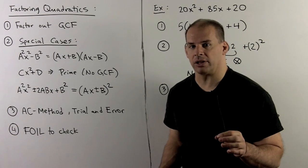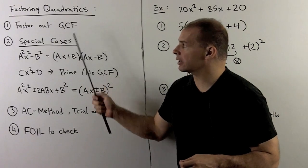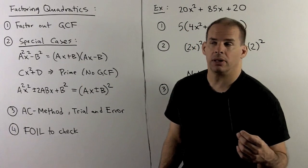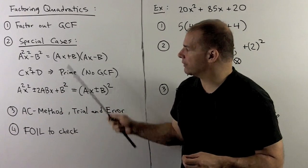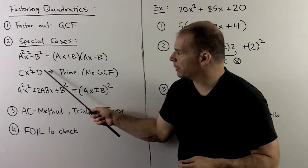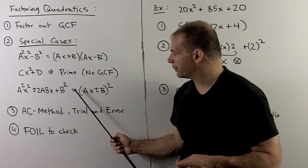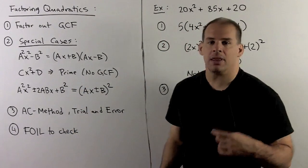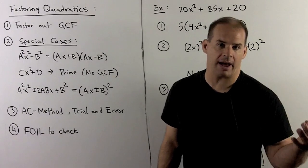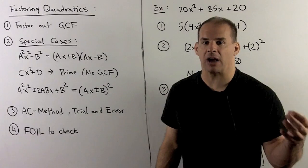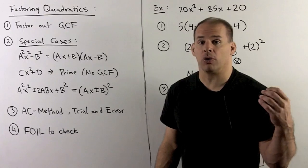Let's put everything together in a checklist for factoring a quadratic. First, factor out the greatest common factor — this can make the work much easier. Then check if what remains is one of our special cases: difference of two squares, cx² + d (which generalizes sum of squares), or perfect square trinomials. If none of these apply, move on to another method such as the AC method or trial and error. If one works, you have your factorization — always check by FOILing back to the original polynomial.